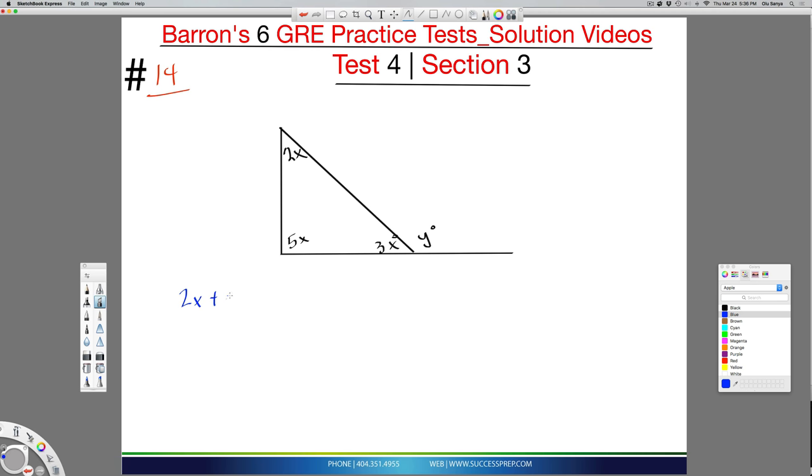So we can go ahead and say, well, 2X plus 5X plus 3X should give us 180. If you add all that up, then you're going to get 10X equal to 180, and then divide by 10 on both sides. So X is 18.